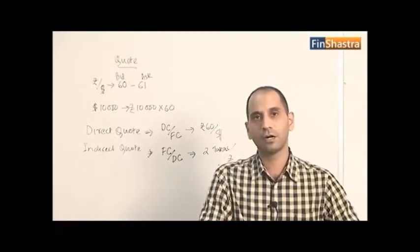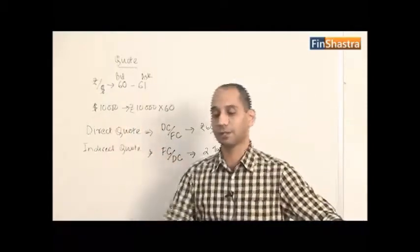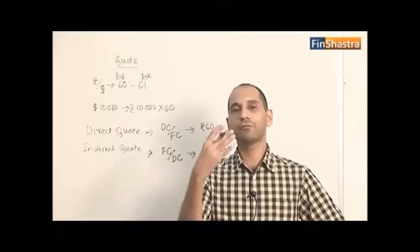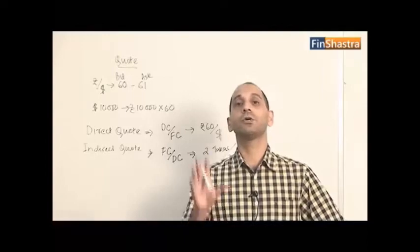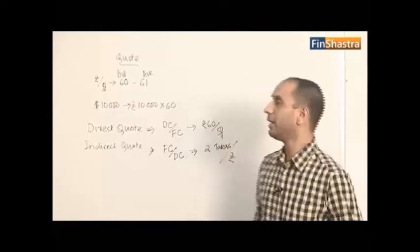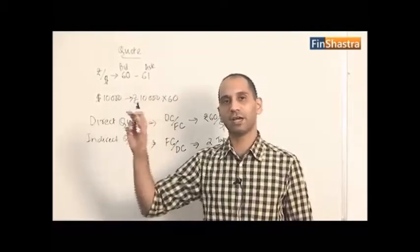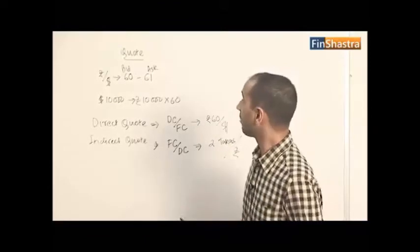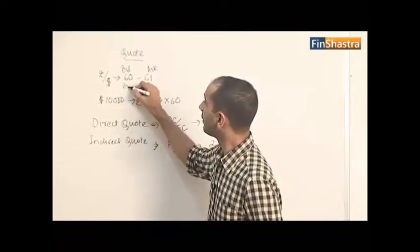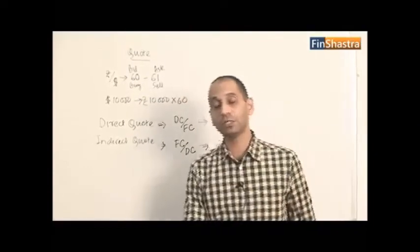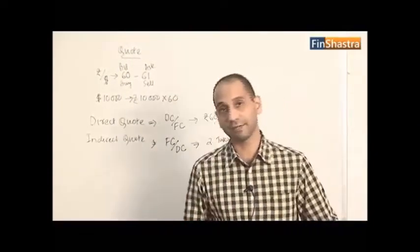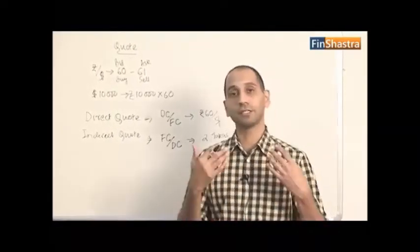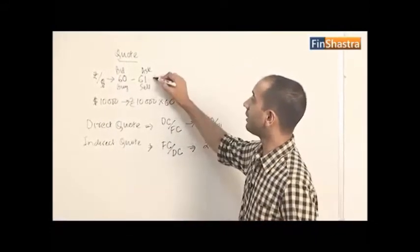If I want to buy dollars, I approach the market. From the market's perspective, the market is selling dollars to me, so it applies the sell rate of 61 — meaning I pay rupees 61 per dollar. The bid rate of 60 is the rate at which the market buys dollars from you. The terms buy and sell are always from the market's perspective.